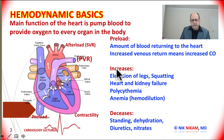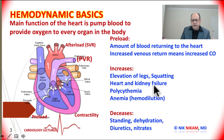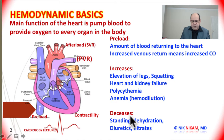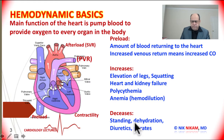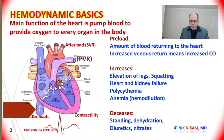Let us look at some things that can increase the preload. Elevation of the legs returns more venous blood to the heart, increasing preload. Squatting also increases venous return. Patients with heart failure and kidney failure due to volume retention have increased preload. Polycythemia and anemia with hemodilution, due to increased intravascular volume, also have increased preload. Things that decrease preload include standing, which causes venous pooling; dehydration, which decreases intravascular volume; diuretics; and nitrates, which dilate the venous system and cause venous pooling.